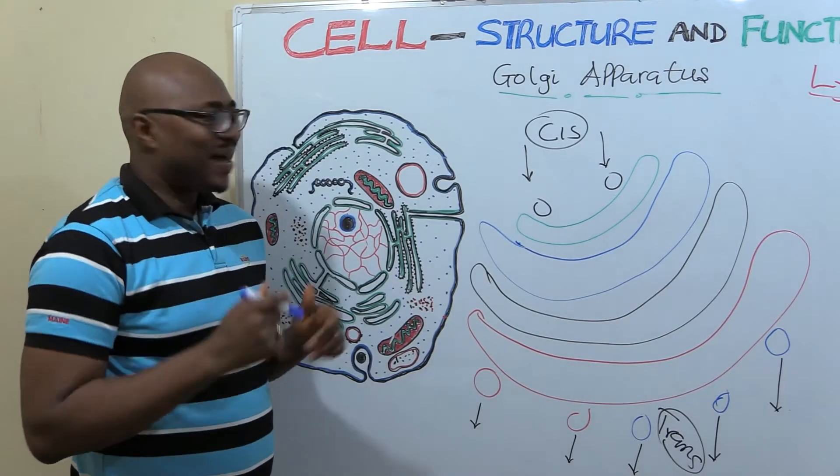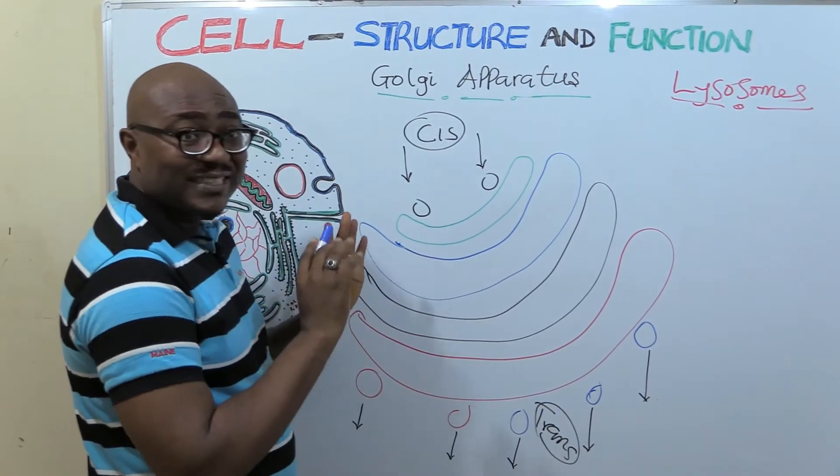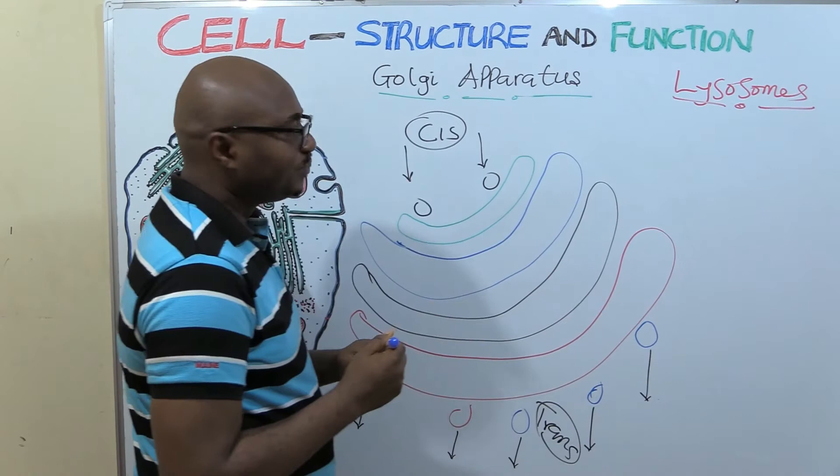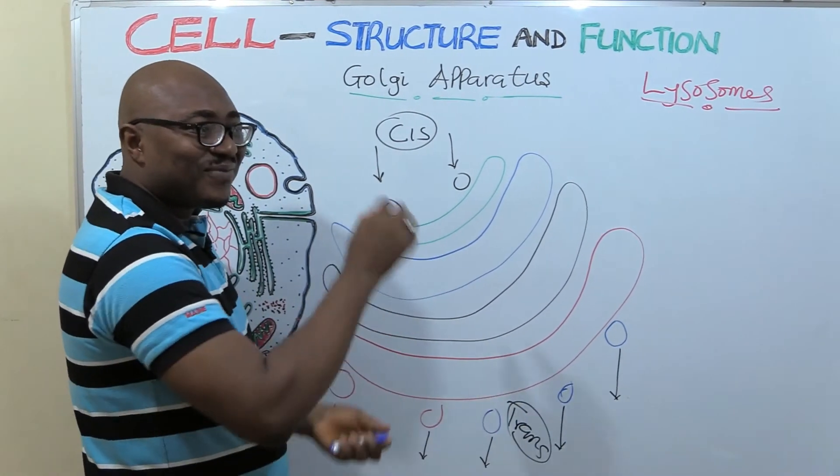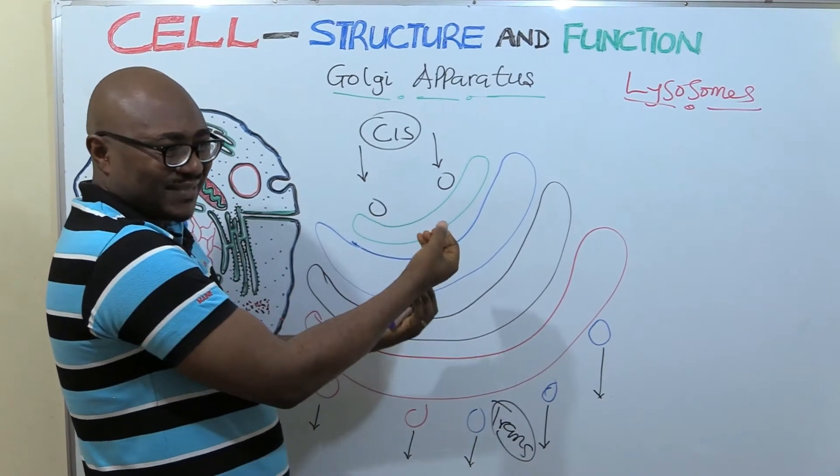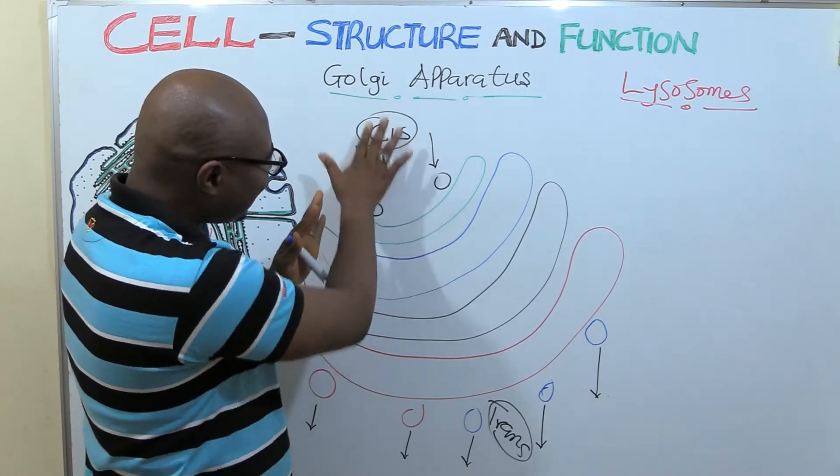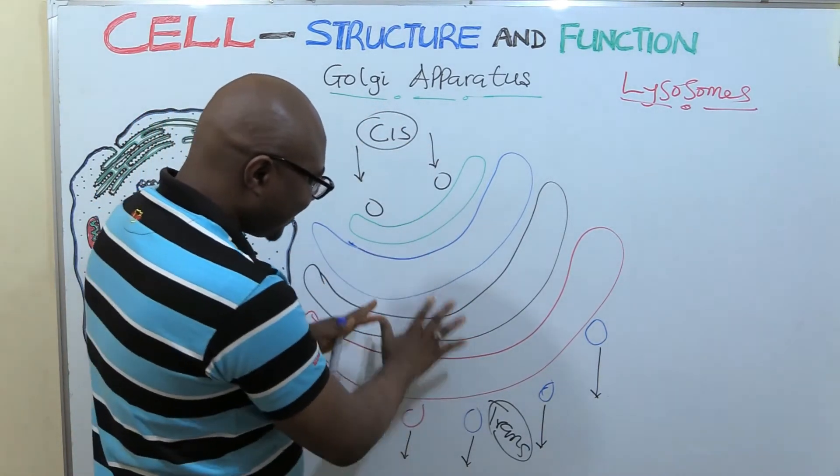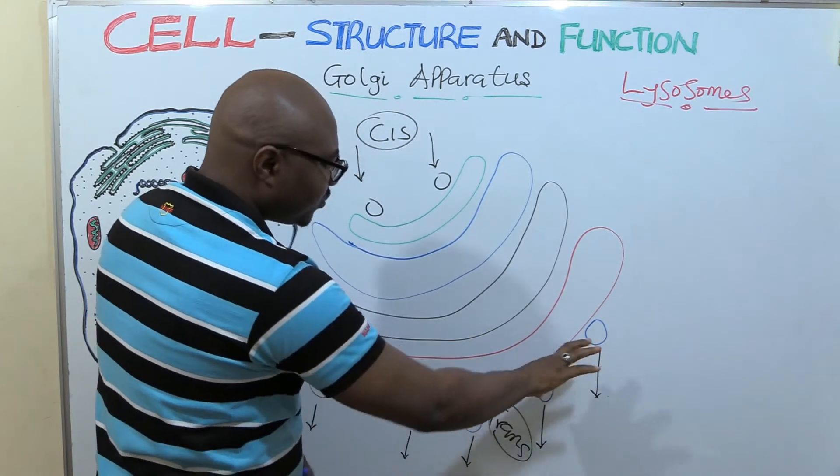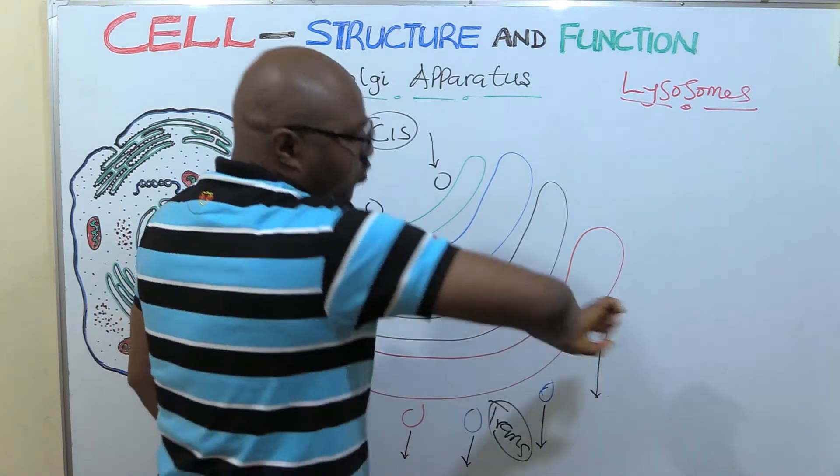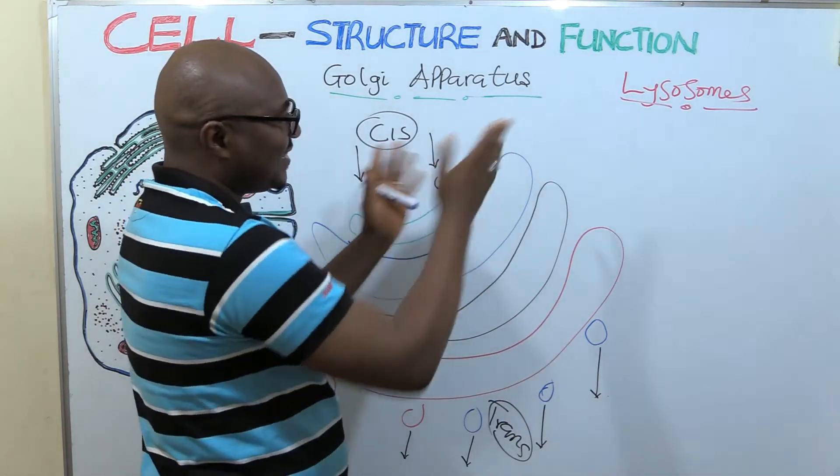Alright, welcome back. So now we're going to be dealing with this other cell organelle called lysosome. It's truly related to the Golgi apparatus. In fact, it's believed that it is made from the Golgi apparatus. So this is it. This end that receives and then all these things, they are vesicles. It's broken out from the Golgi apparatus. So Golgi apparatus is what makes the lysosome.